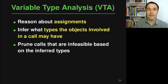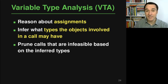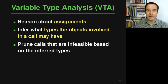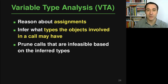The first of the two algorithms is called VTA, or variable type analysis. The main idea is to reason about assignments in order to infer what types the objects involved in the call may actually have.